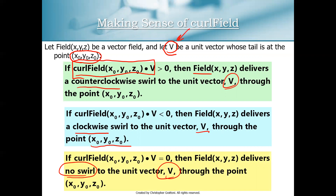Where does the vector V come from? You can make one up, but most of the time in a problem you'll be given some vector V and asked: what kind of swirl does our vector field deliver to V at a given point (x₀, y₀, z₀)? So V is typically a given value and you just need to compute the dot product.